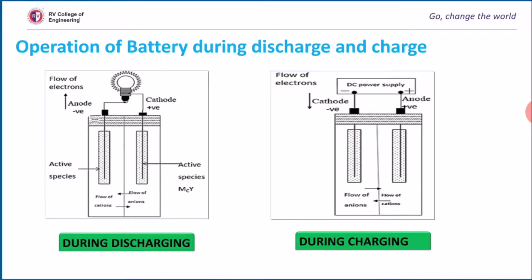Charging: during charging, electricity is passed in the opposite direction, from cathode to anode. See the direction of current in the picture. During this process, EMF regains its original value.